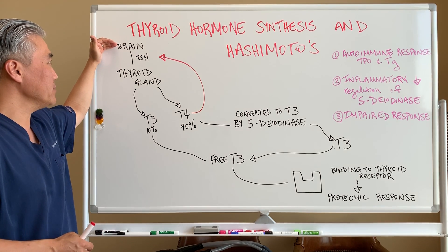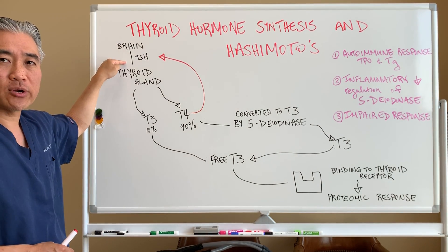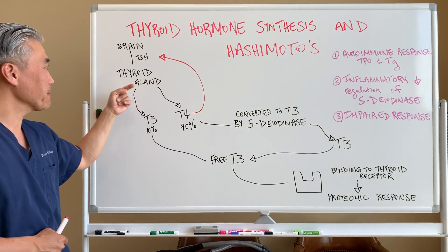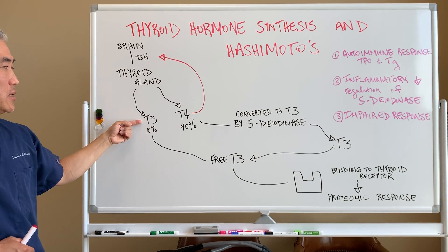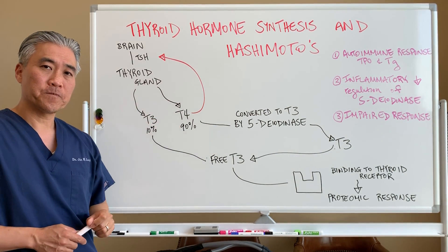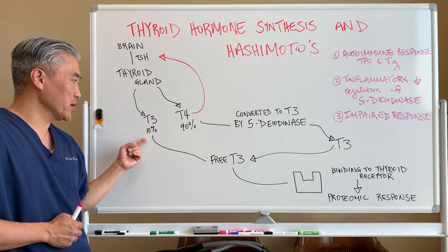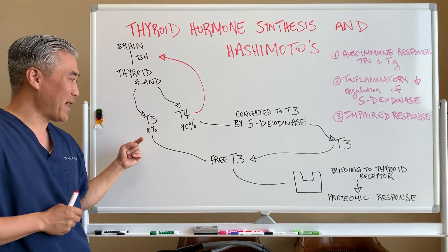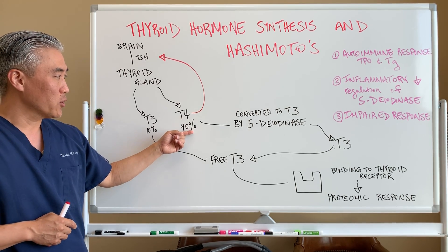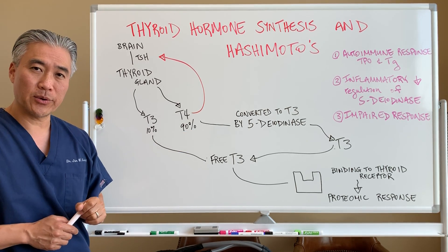Your brain creates TSH, or thyroid stimulating hormone, which is tested on blood. Your thyroid produces T3 and T4. If you look at the production, T3 — which is considered the active hormone — is only 10 percent. Your inactive T4 is 90 percent.